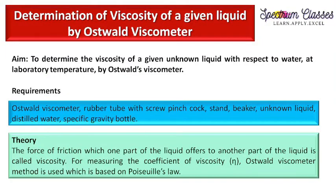Since we are going to measure viscosity, what is called viscosity? The force of friction which one part of the liquid offers to another part of the liquid is called viscosity. This is one viva question. For measuring the coefficient of viscosity, the Oswald viscometer method is used, which is based on Poiseuille's law.